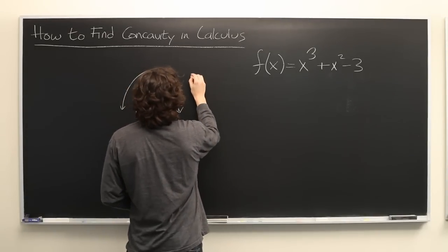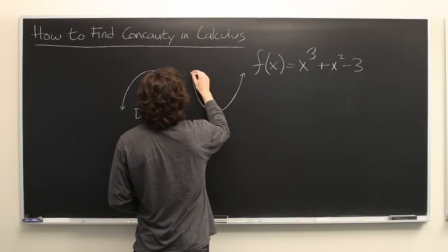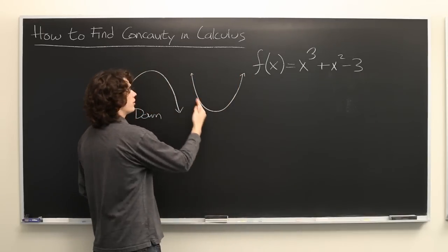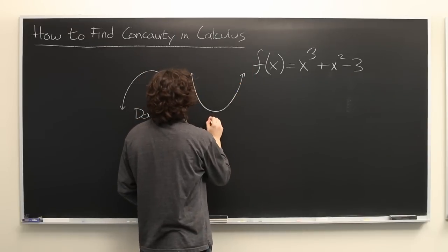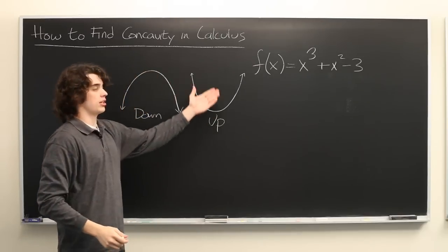Concave up, on the other hand, is exactly the opposite. As you move to the left, the curve goes up. Move to the right, the curve goes up. This is a right-sided U.